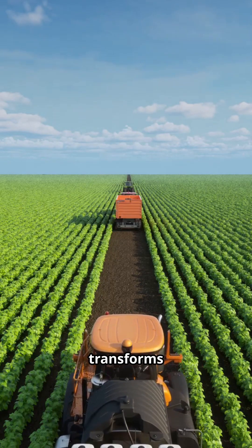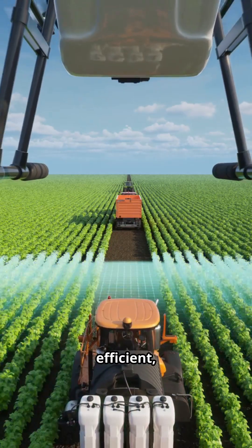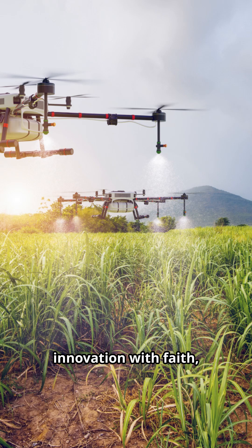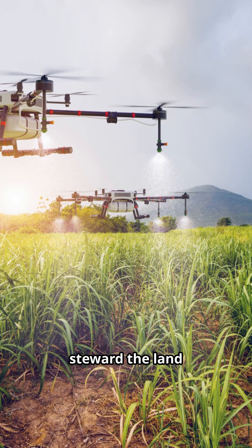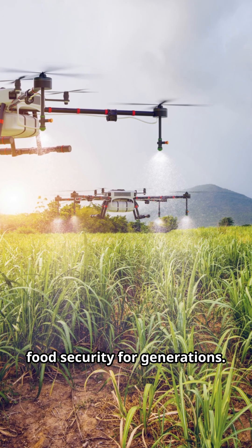Conclusion: AI transforms agriculture into a precise, efficient, and sustainable practice. By integrating innovation with faith, humanity can steward the land wisely and ensure food security for generations.